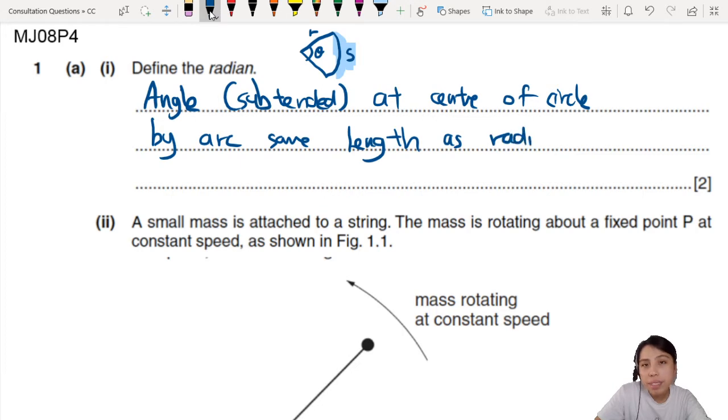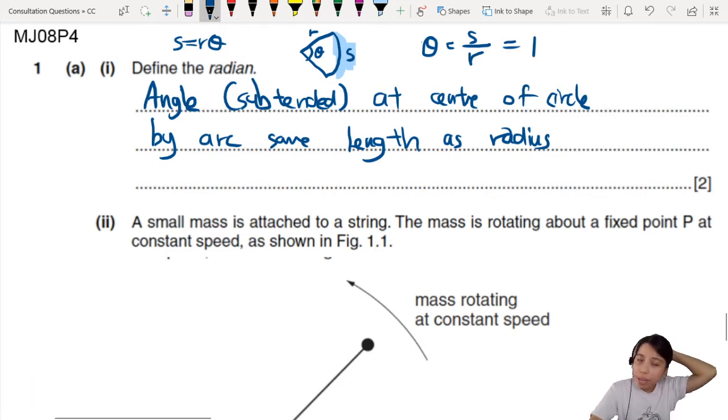We can talk about radian as the angle subtended at the center of a circle. But the language goes subtended at the center by what? You say by an arc. The arc refers to this curvy part, by an arc same length as radius.